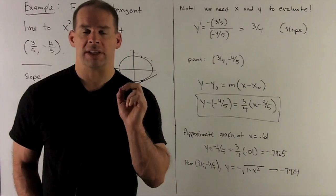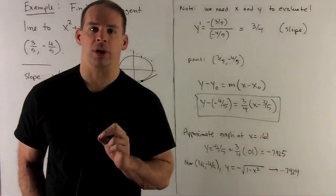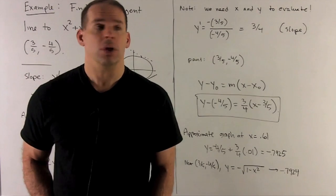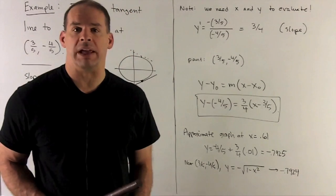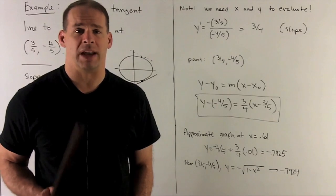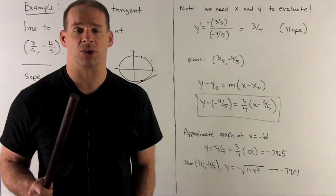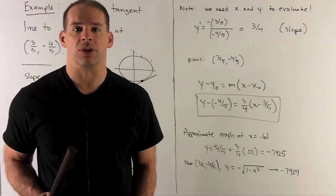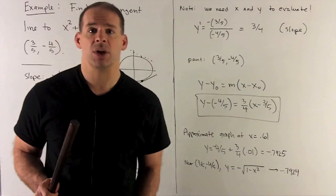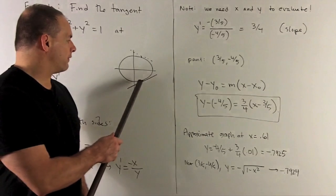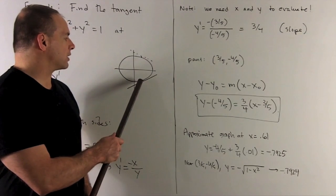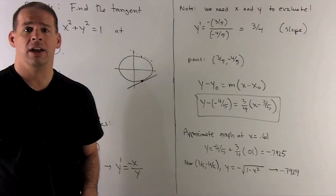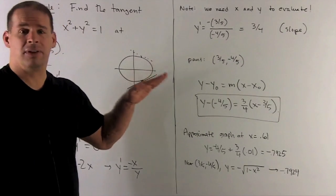Now we want our tangent line, so I've got to put actual numbers into this thing to get our slope. Our point's going to be (3/5, -4/5). I put that into our y' so it's -x/y, and you'll notice we're going to wind up with 3/4. Does this make sense? Well, if we look at the point on the unit circle, if I'm at (3/5, -4/5), that's going to be the slope of my tangent line there, and that's positive and it seems like it's in the ballpark, so that's probably going to be a correct slope.